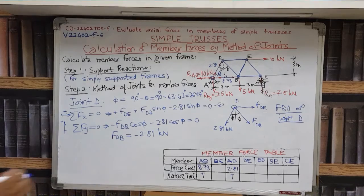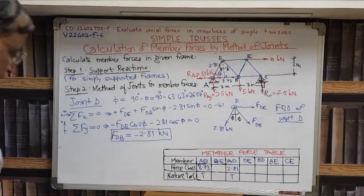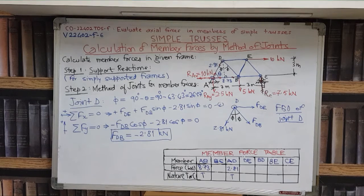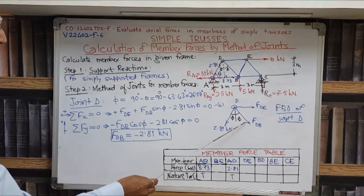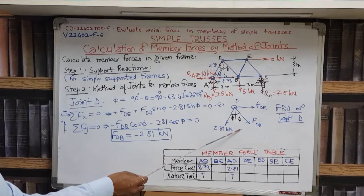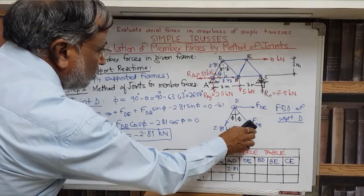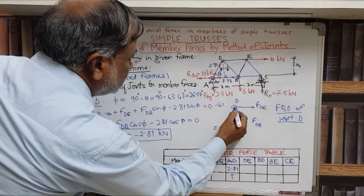Let us put this in a box. But we have to understand the meaning of this minus answer. The minus sign indicates that the direction which you assumed should be reversed. The assumed direction was away from this joint. So now this direction is wrong and you should reverse that direction. In such a case, we have to show the direction like this.